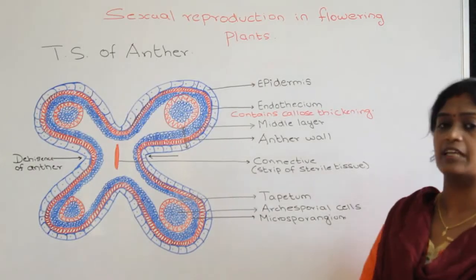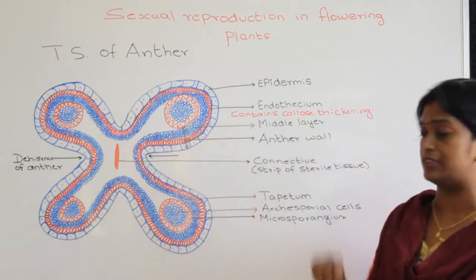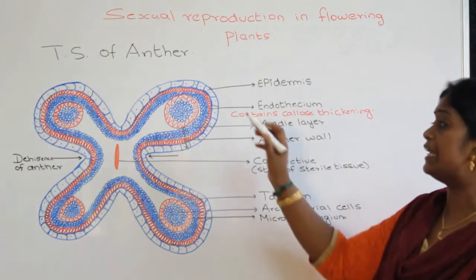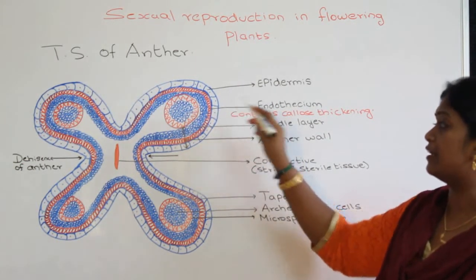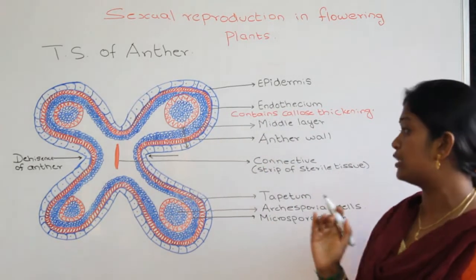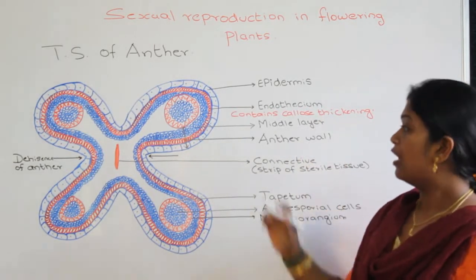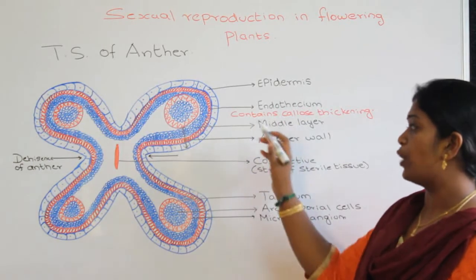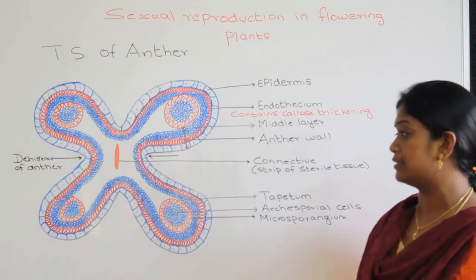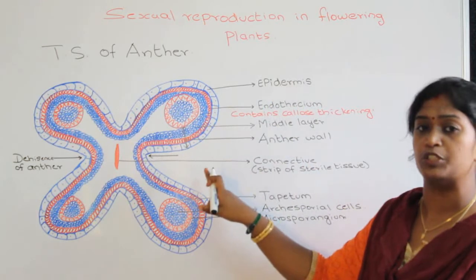Let's study the transverse section of the anther. The anther consists of a single layer of cells called the epidermis. Beneath the epidermis we have radially arranged cells called the endothecium. These radially arranged cells are closely packed, and the endothecium contains callose thickening. Beneath the endothecium we have the middle layer, which is made up of 3 to 4 layers of parenchyma cells. The epidermis, endothecium, and middle layer together constitute the anther wall.